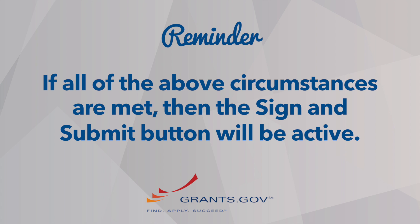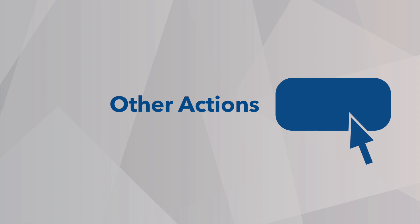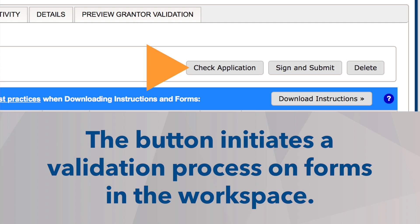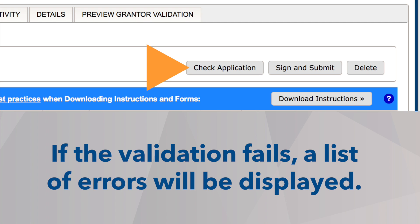The package's close date is today or in the future. If all of the above circumstances are met, then the Sign and Submit button will be active. The Check Application button may be pressed by any Workspace participant. The action runs a validation process which includes ensuring that all the forms' required fields have been completed. If the validation fails, a list of errors will be displayed.